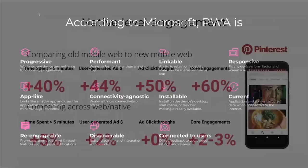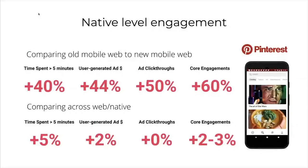Here's an example from Pinterest. They had a mobile web application before and then implemented it as a progressive web app. The result was a 60% increase in engagement with their users — and for a social media platform, engagement is their lifeblood. When they compared it to their native applications, they noticed the engagement levels were pretty much the same. That was of course game-changing for them.